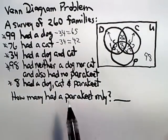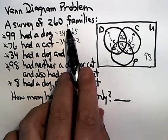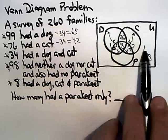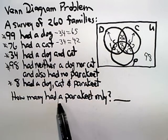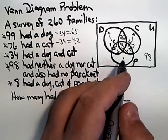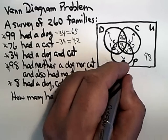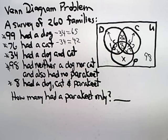Now, the only information that I haven't used is that there are 260 families. So, everything in this universal set has to add up to 260. And remember, I'm looking for how many people had a parakeet only, and I'll just call that X, and I'm trying to figure out what X is.